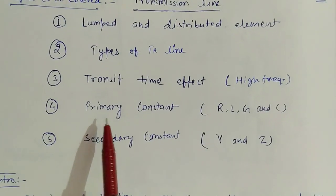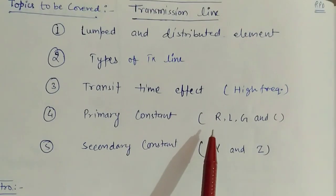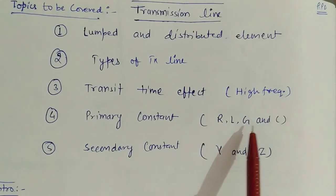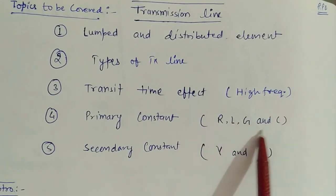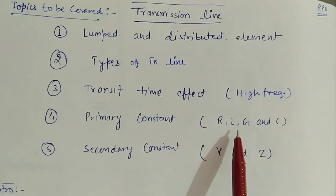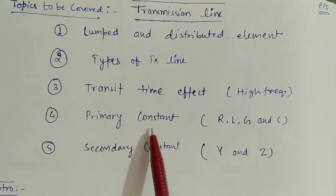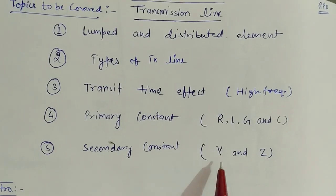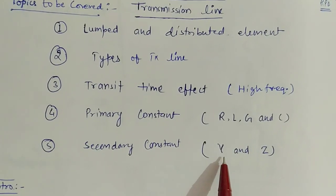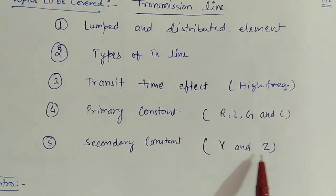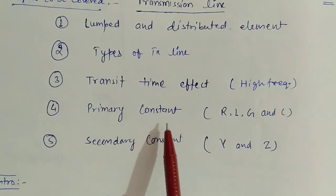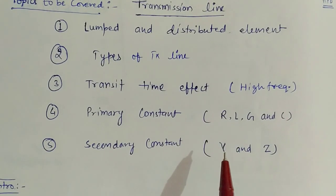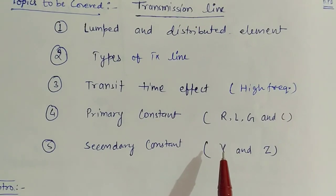The fourth point, I will cover the primary constants of the transmission line: resistance R, inductance L, conductance G, and capacitance C. These will all be considered as per unit length constants. These 4 will be called primary constants. Then based on these 4, we will derive the secondary constants: gamma and Z. Gamma is the propagation constant and Z is the characteristic impedance. When we know the primary and secondary constants, we can derive the parameters and fully define the transmission line.